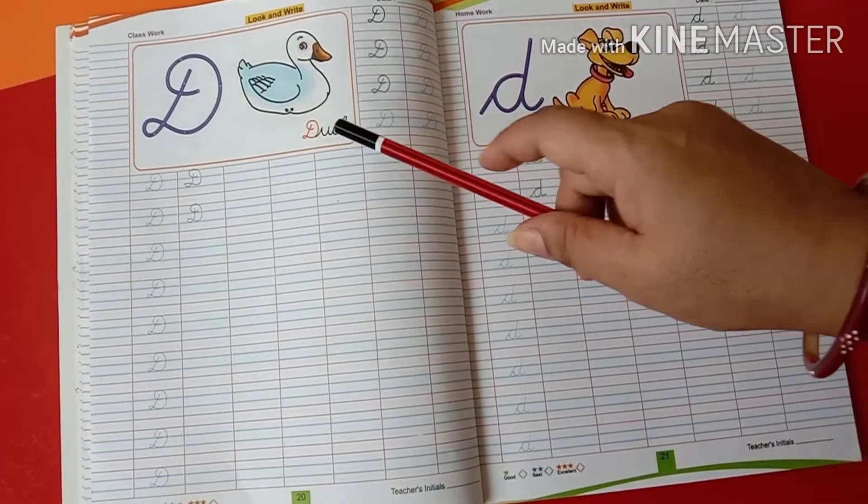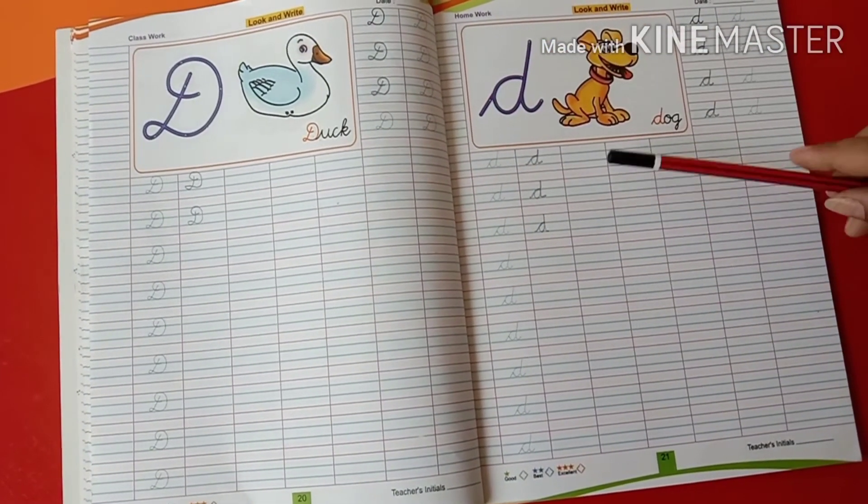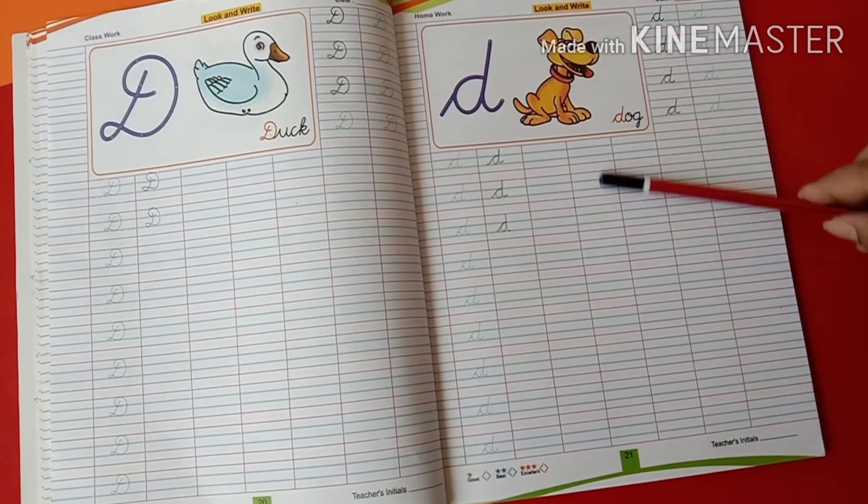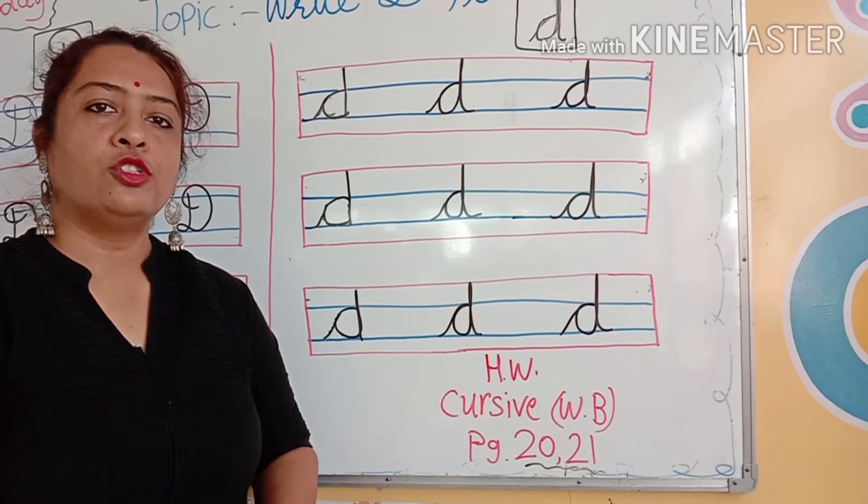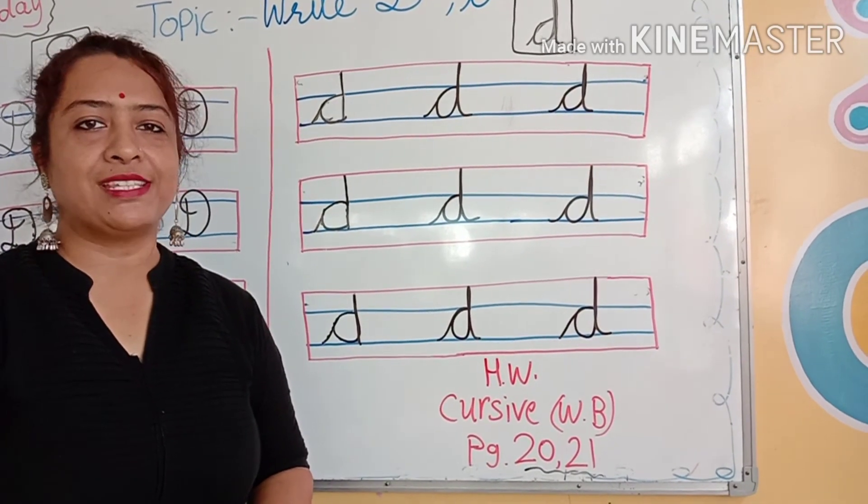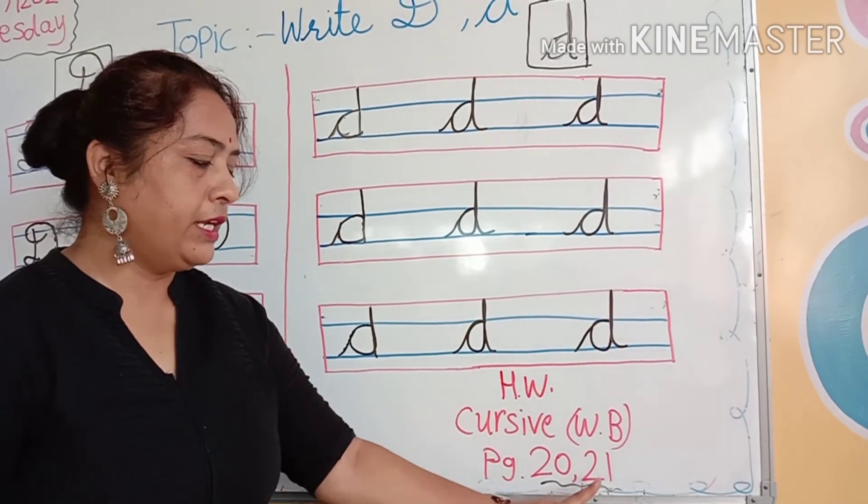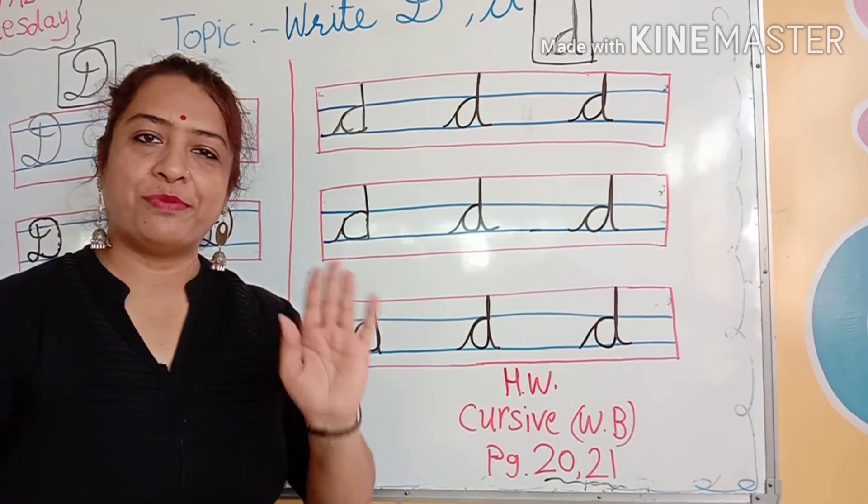Now kids, look here. Half page is your classwork and half page is your homework. You have to write half page in your classwork, half page in your homework. So kids, I hope you understood today's classwork. And your homework is in cursive workbook, page number 20, 21. Okay kids, bye bye.